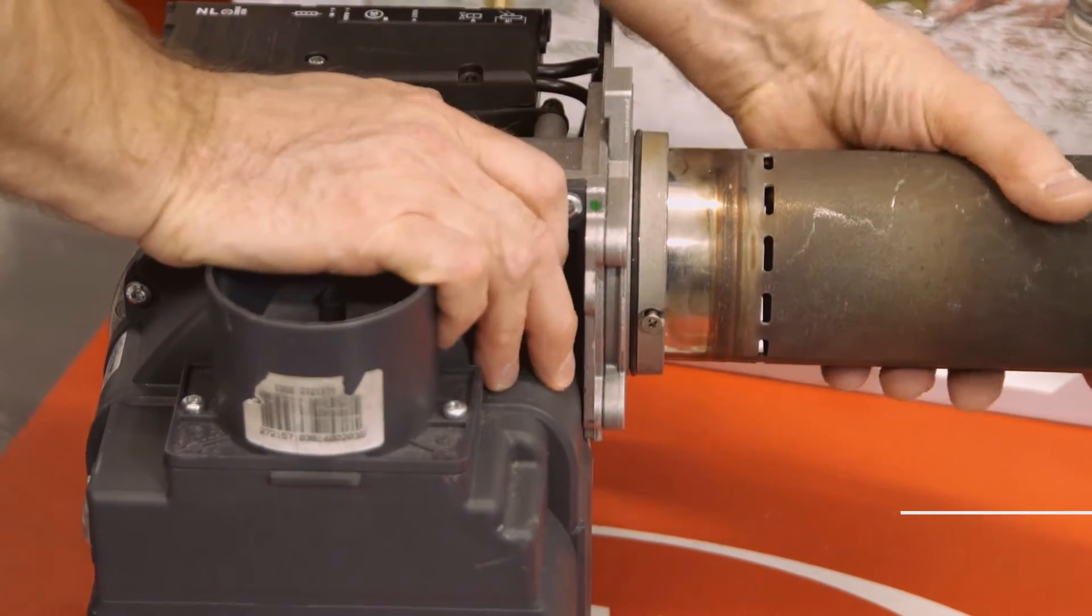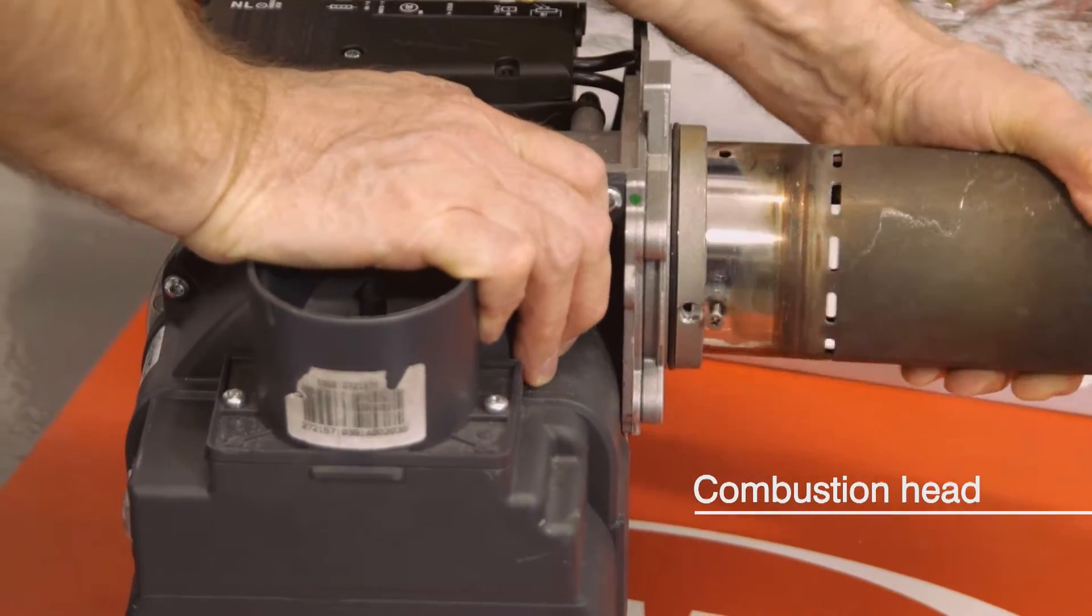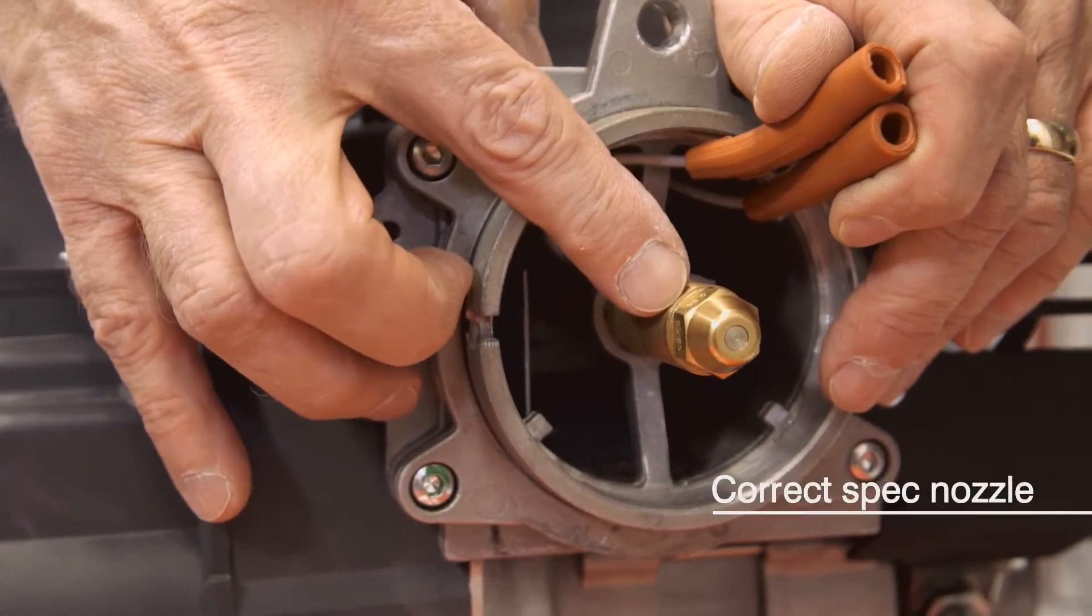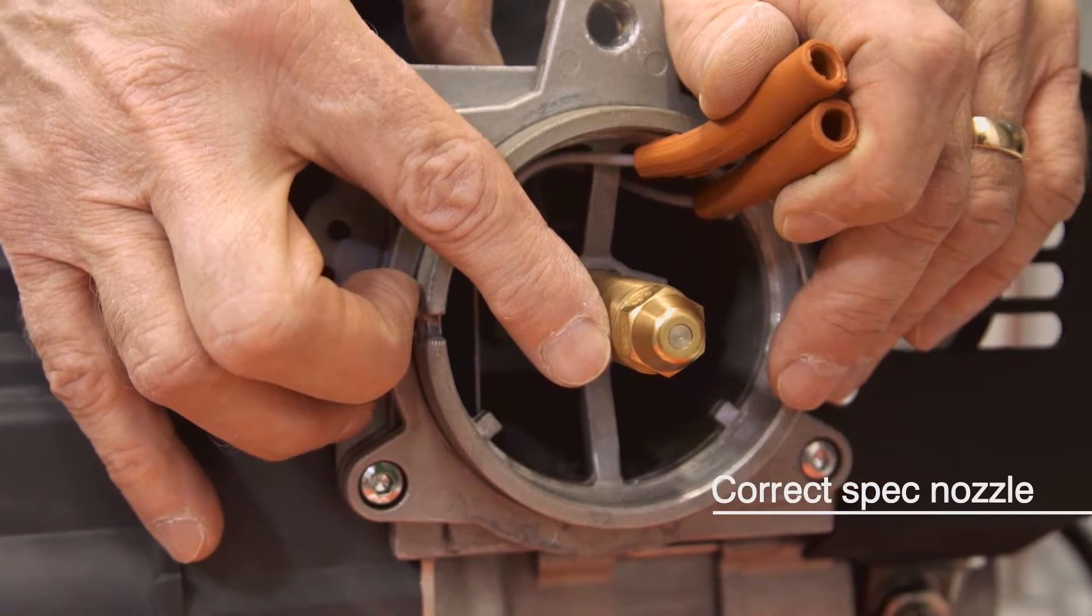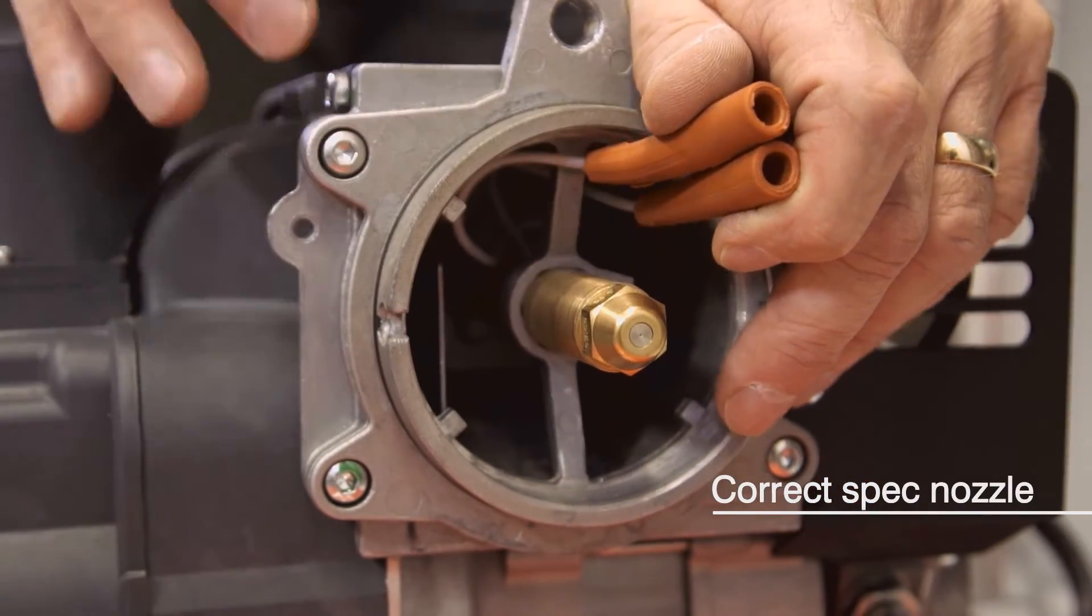First, remove the combustion head. Check that the nozzle is the correct spec for the boiler and output. This information is in the installation instructions.